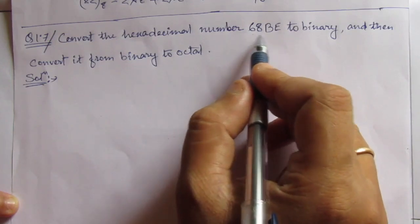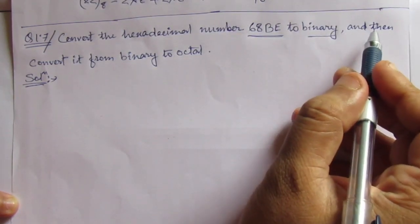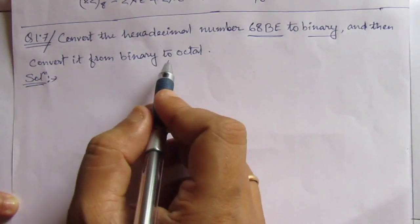First of all, we have to convert this hexadecimal number into binary, and then convert it from binary to octal.